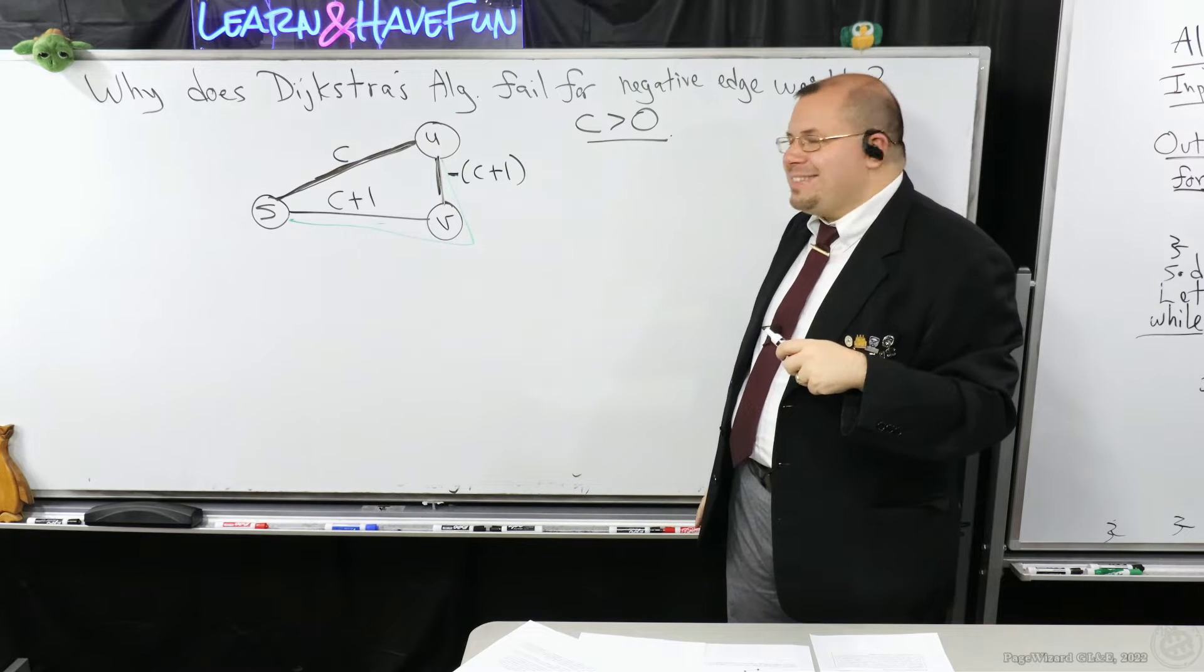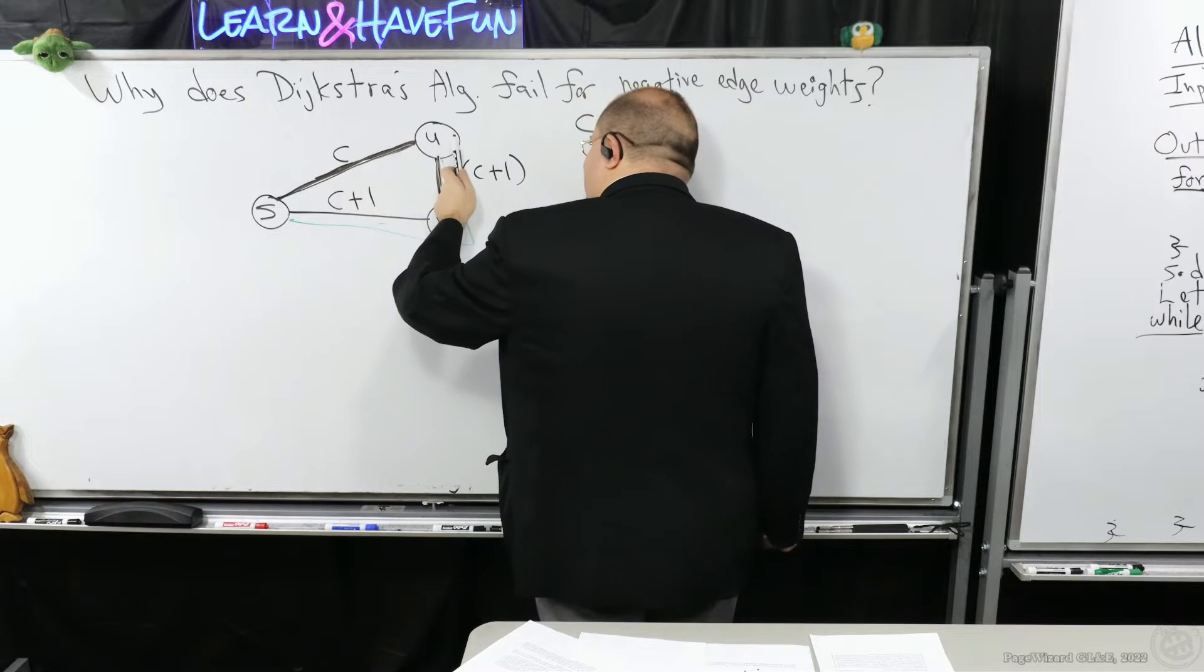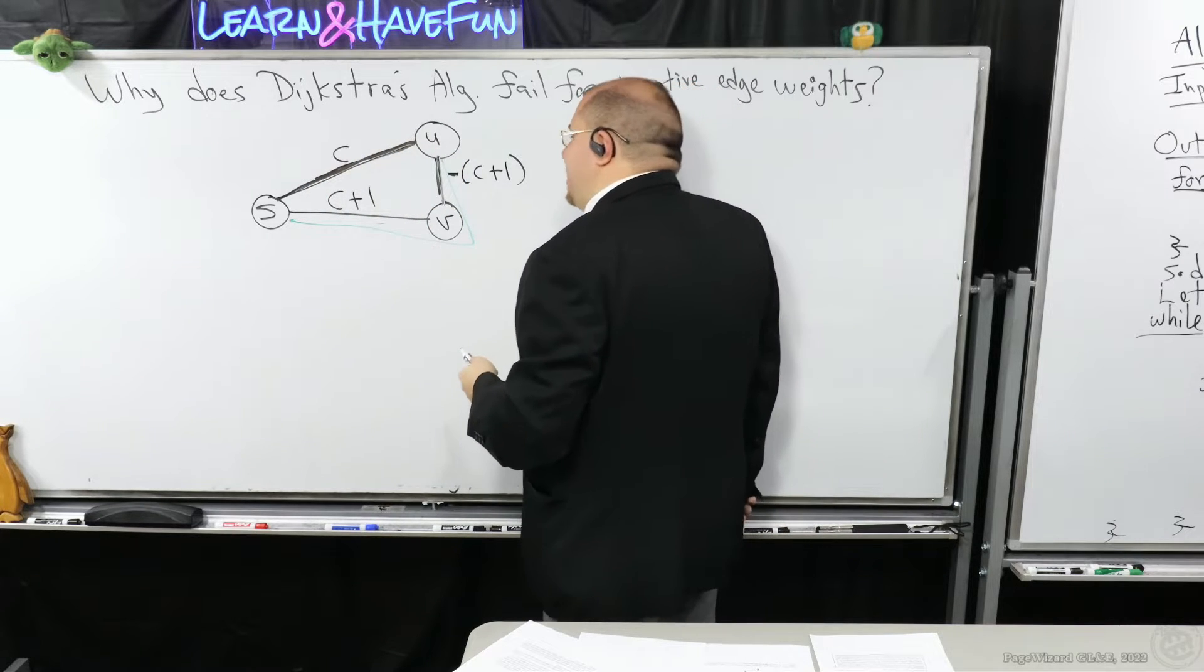Which, this isn't going to cut it, right? Because notice that this does not contain the shortest path from S to U.